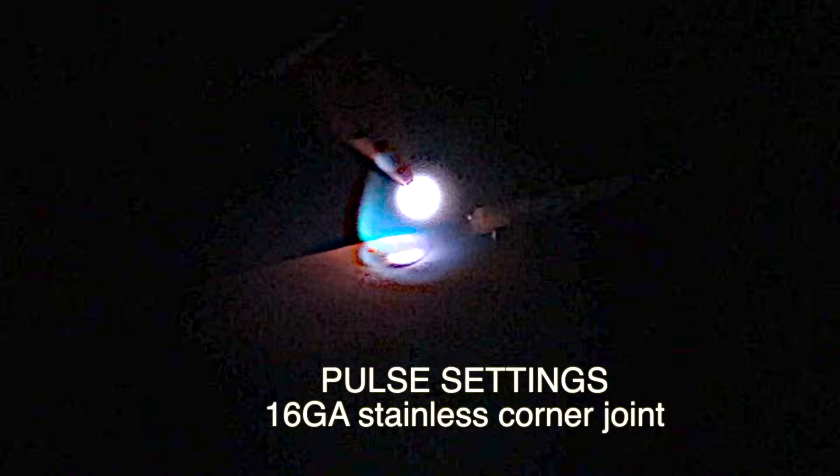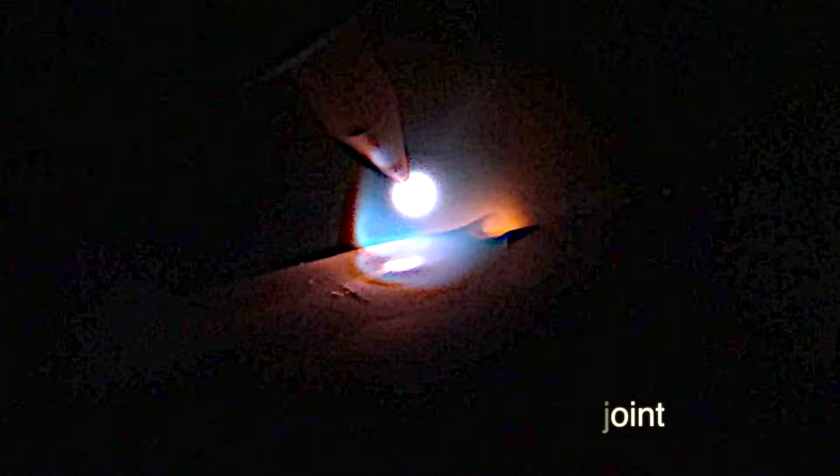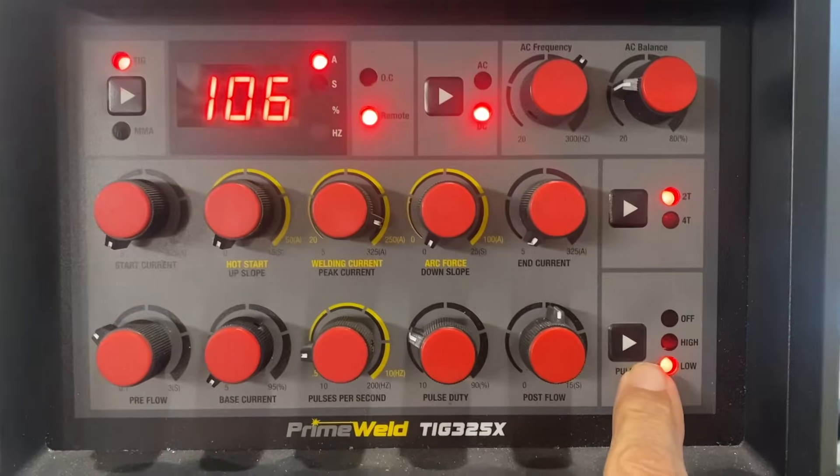These are some quick pulse settings that I've found to work really well for autogenous welding without filler metal on thin stainless steel.